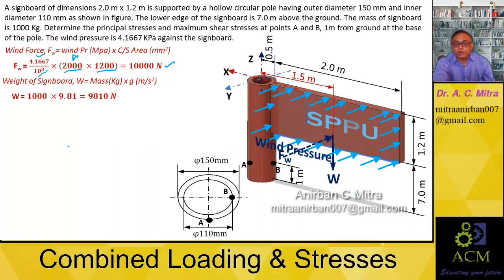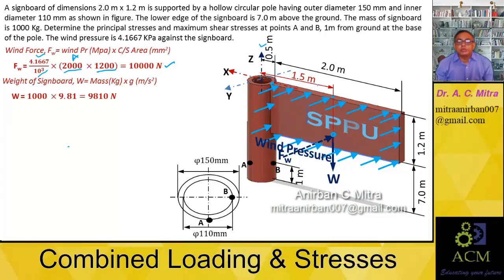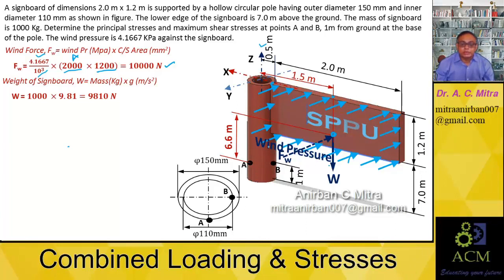The CG is the midpoint of this sign board. The total length is 2m, so from the pole to the CG it is 1m, and the offset distance from the pole center is 0.5m, giving a total CG distance of 1.5m. The vertical distance from point A to the CG is: 7m (ground to bottom of sign board) minus 1m equals 6m, plus half of 1.2m equals 0.6m, so the distance from A to the CG point is 6.6m.